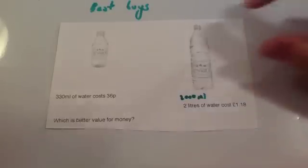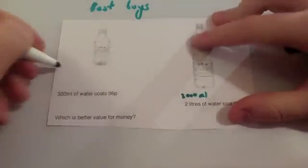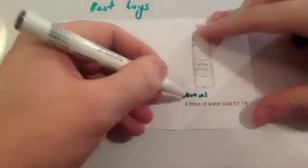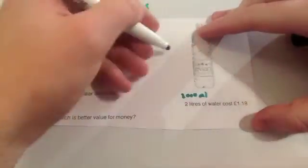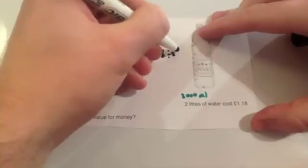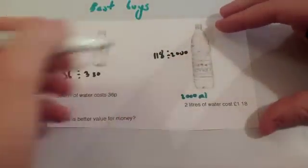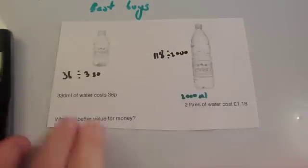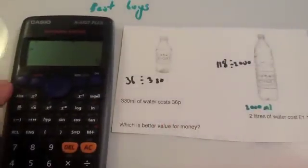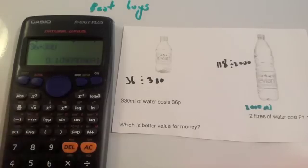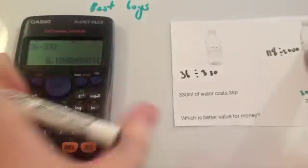Just take the cost and divide it by the amount given. The cost is 36p, we're going to divide that by 330. For this one, the cost is 118 pence, we're going to divide by 2000. Notice how I've changed them into the same units: pence, pence, milliliters, milliliters. Make sure you're dealing with the same things for both of them. So the first option, the small bottle, we've got 36 divided by 330, and that's equal to 0.109 pence per milliliter.